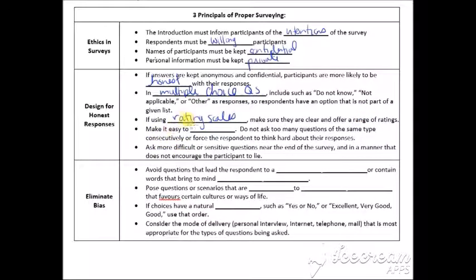Make it easy to continue. You do not want to ask too many questions of the same type consecutively or force the respondent to think hard about the responses, right? You want it to flow. Ask more difficult or sensitive questions near the end of the survey and in a manner that does not encourage the participant to lie. So very neutral, very approachable.